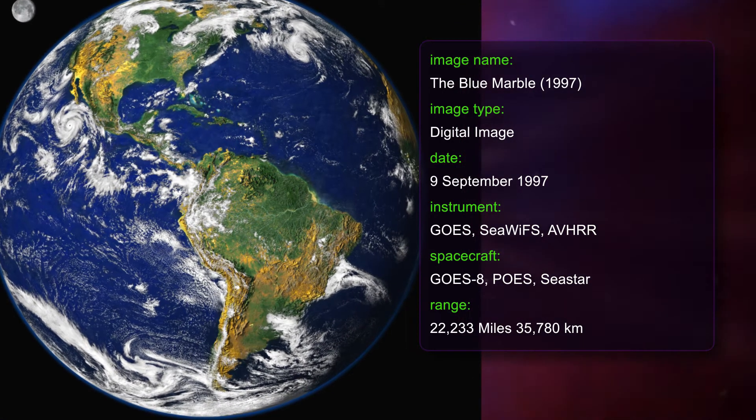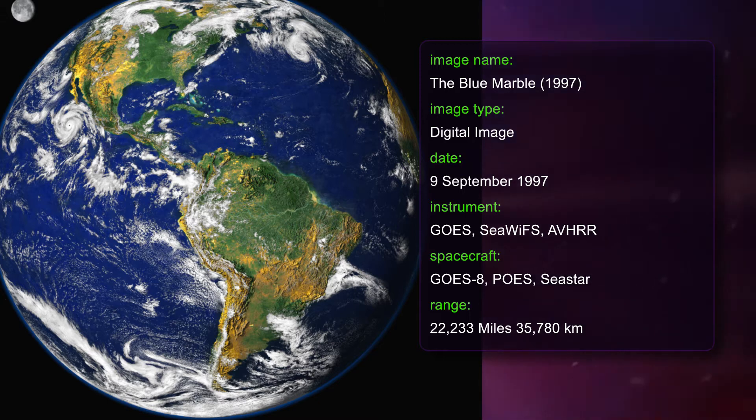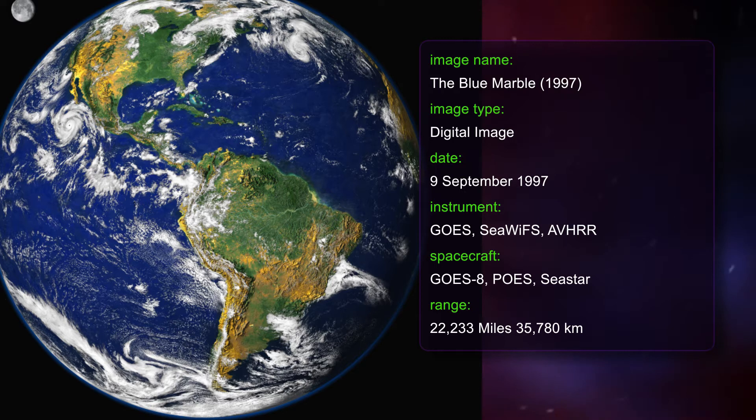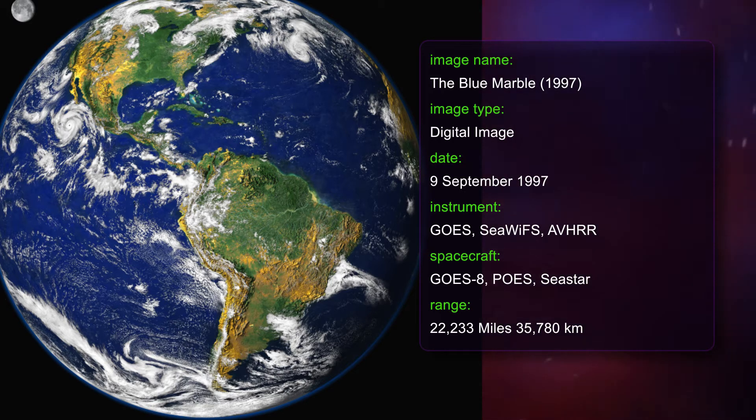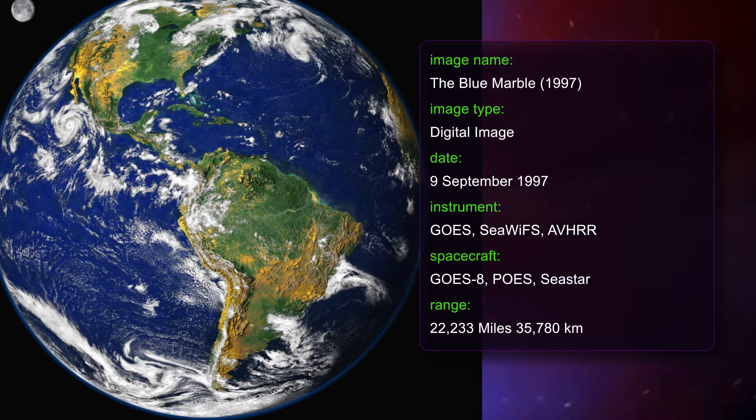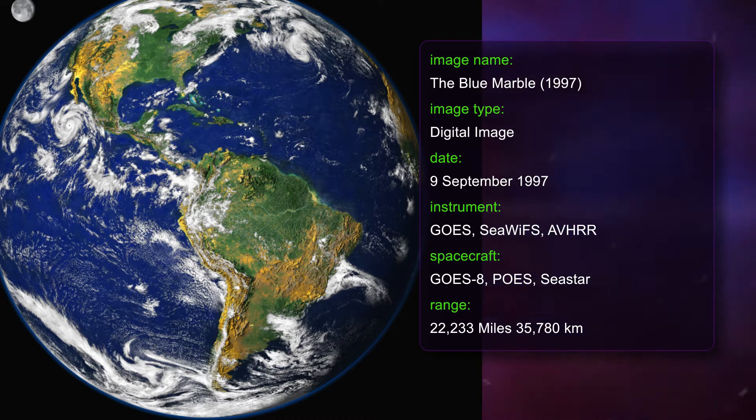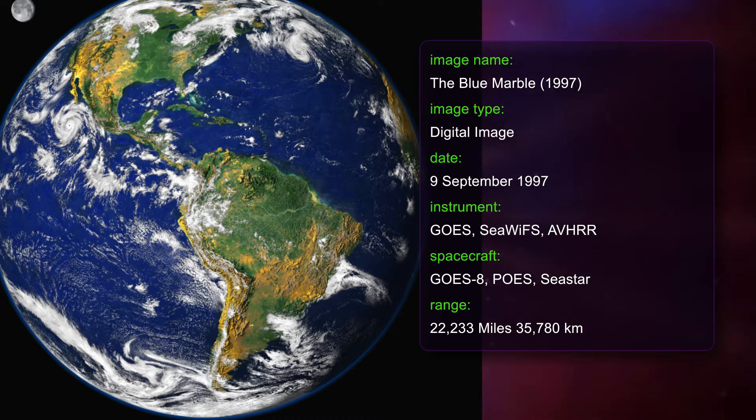The image of the full disk Earth and its clouds was taken on September 9, 1997 by NOAA's GOES-8 satellite. The ocean data was collected in autumn 1997 by NASA's Seastar satellite. The land color is portrayed by a vegetation index calculated using data collected during September 1997 by NOAA's polar orbiting environmental satellites.